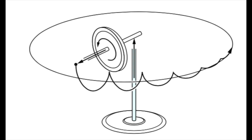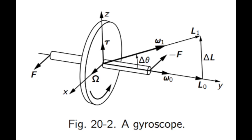To study this strange phenomenon of precession, we must remember that angular velocity, angular momentum, and torque are all vector quantities. In particular, we need the general relationship between the net torque T that acts on a body and the rate of change of the body's angular momentum L.